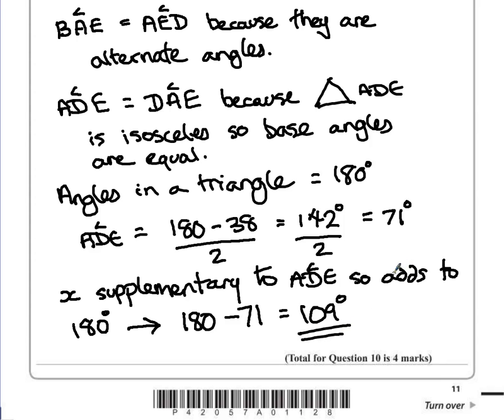Each step has been justified with the correct mathematical notation, therefore we can pretty much guarantee that we've got all four marks.